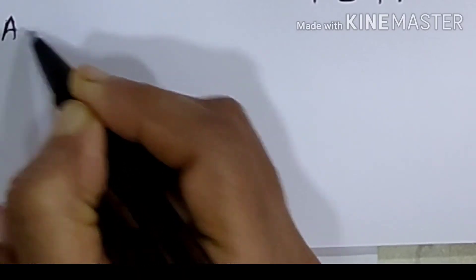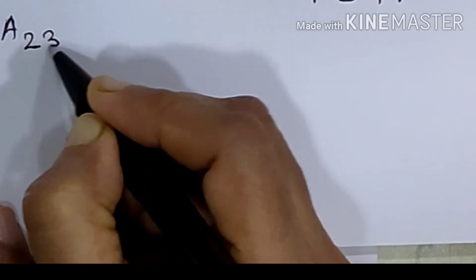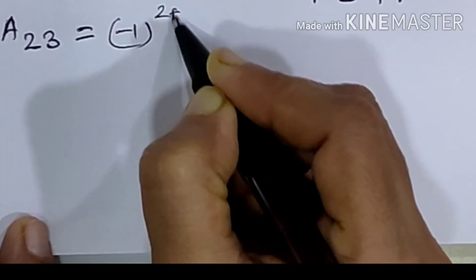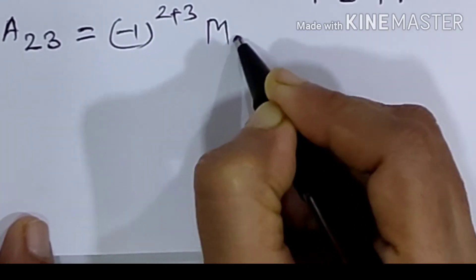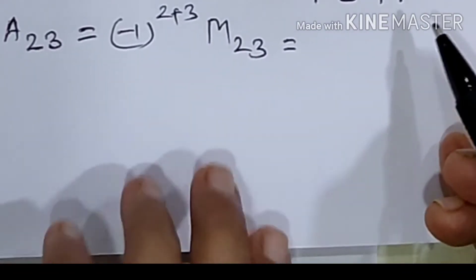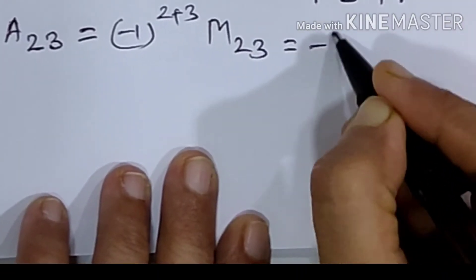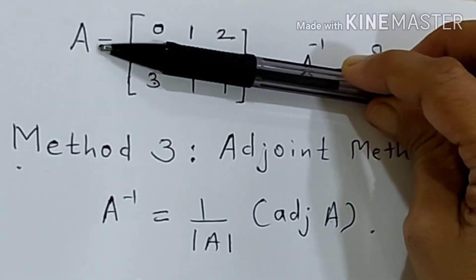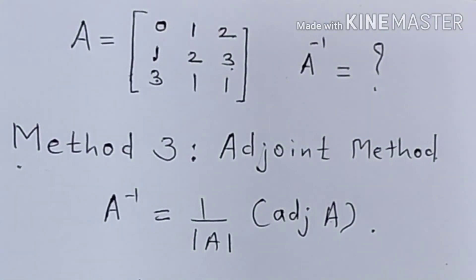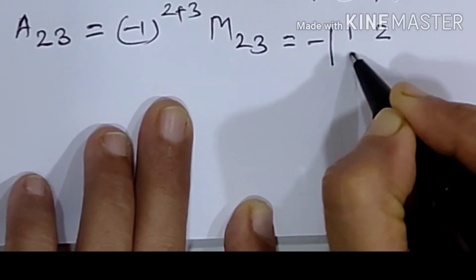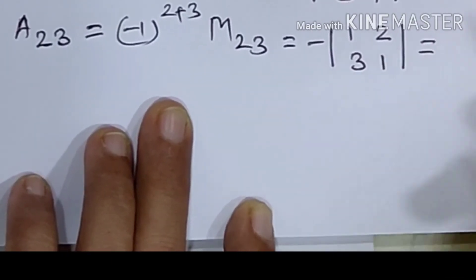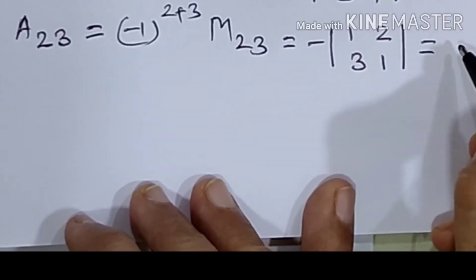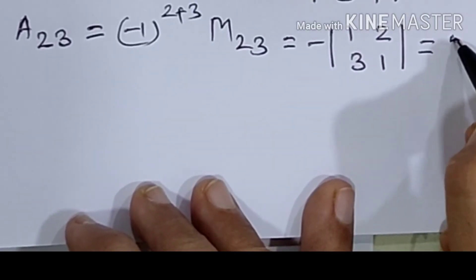Then A23 is equal to minus 1 raised to 2 plus 3, into M23, so minus of the determinant. Deleting the second row and third column gives elements 1, 2, 3, 1. That equals 1 minus 6, which is minus 5. With the outside minus sign: minus of minus 5 gives plus 5.